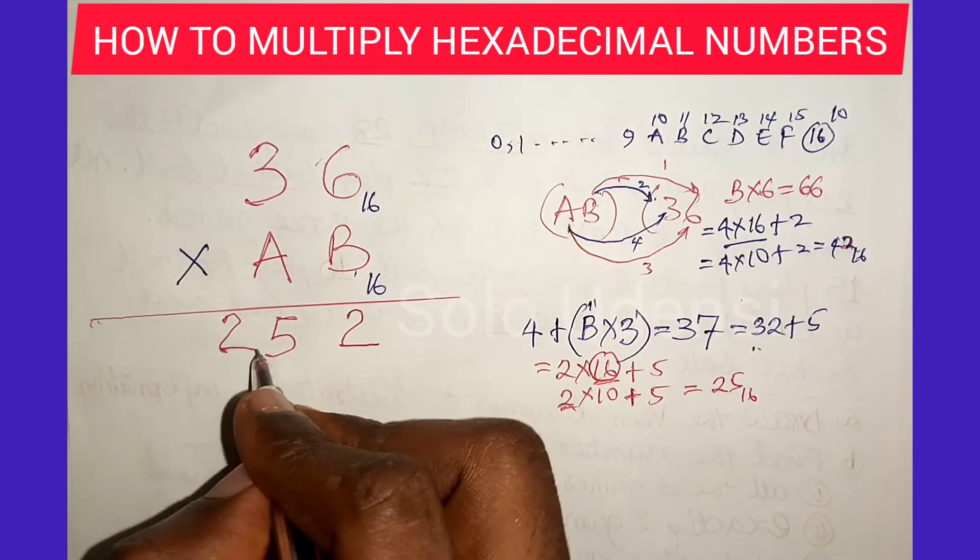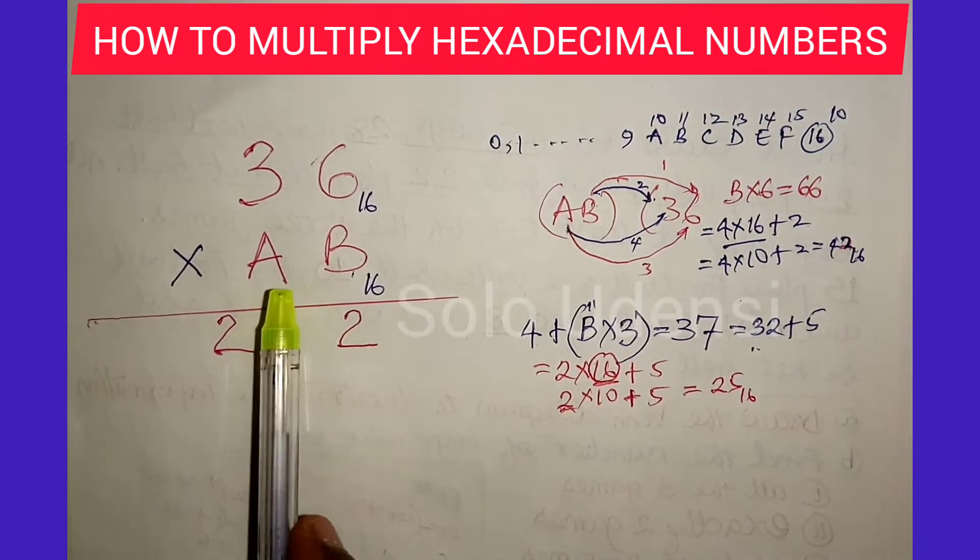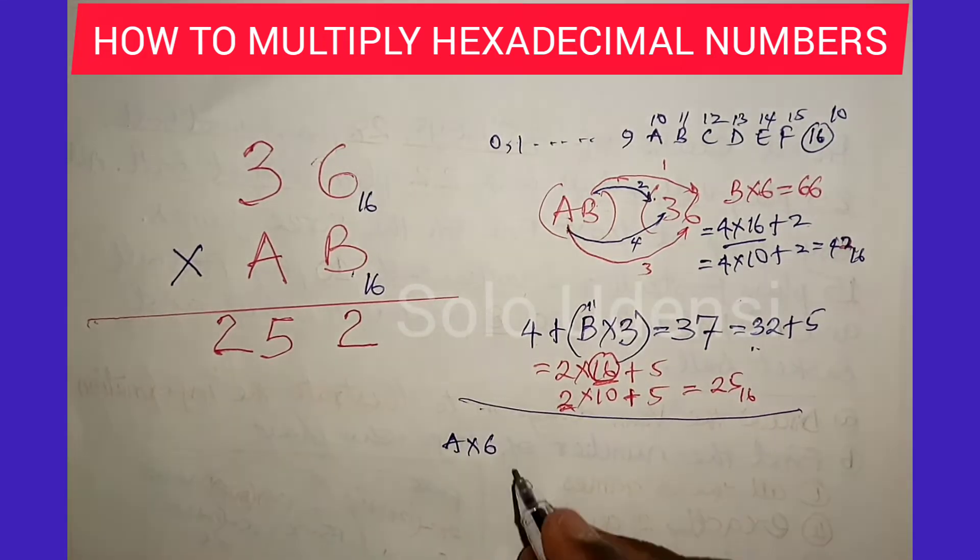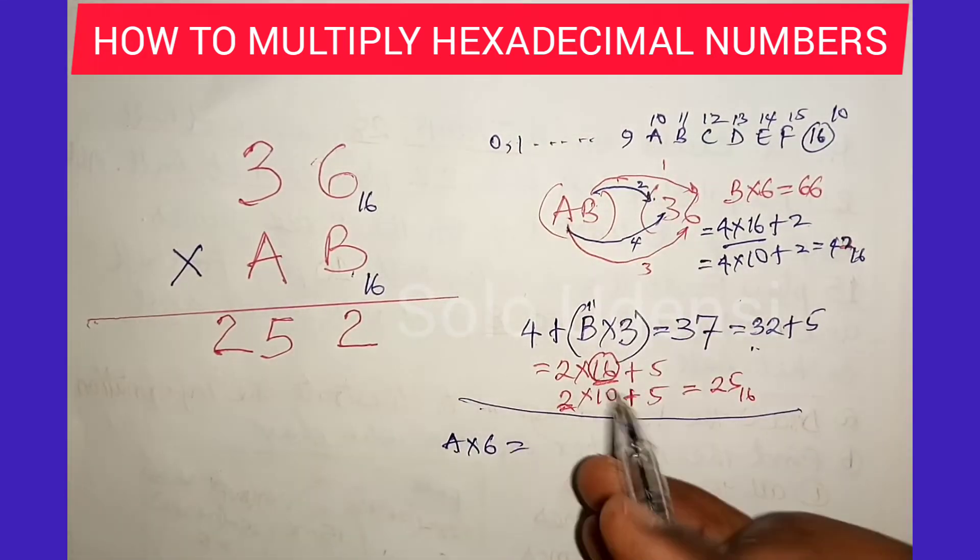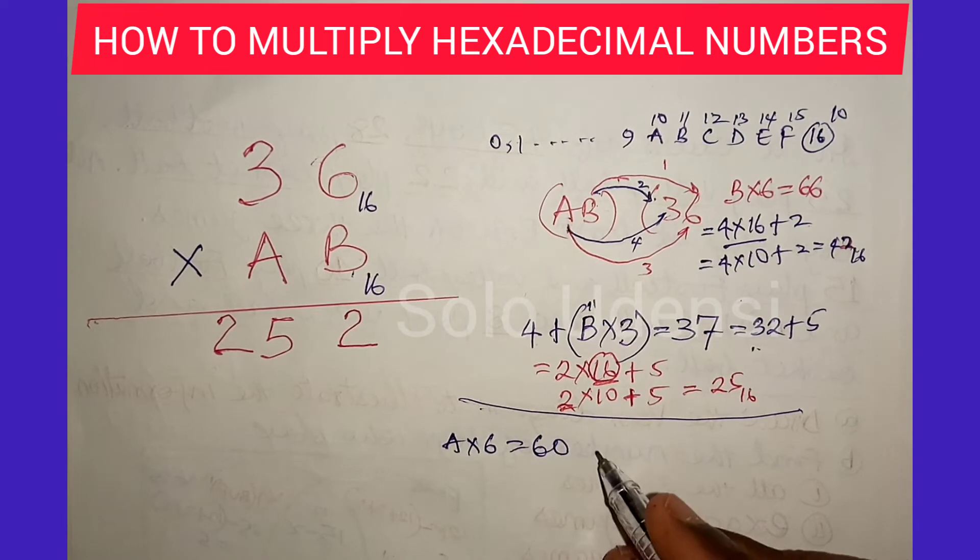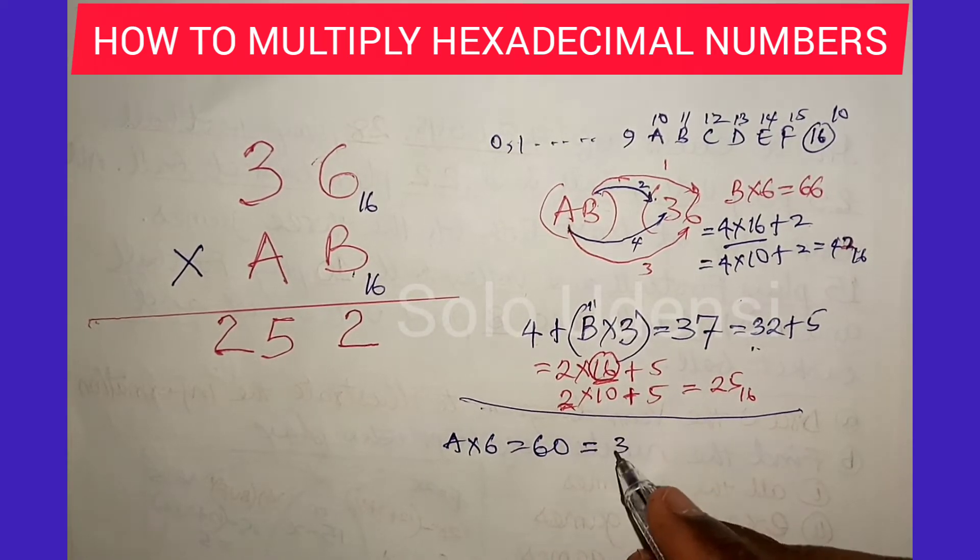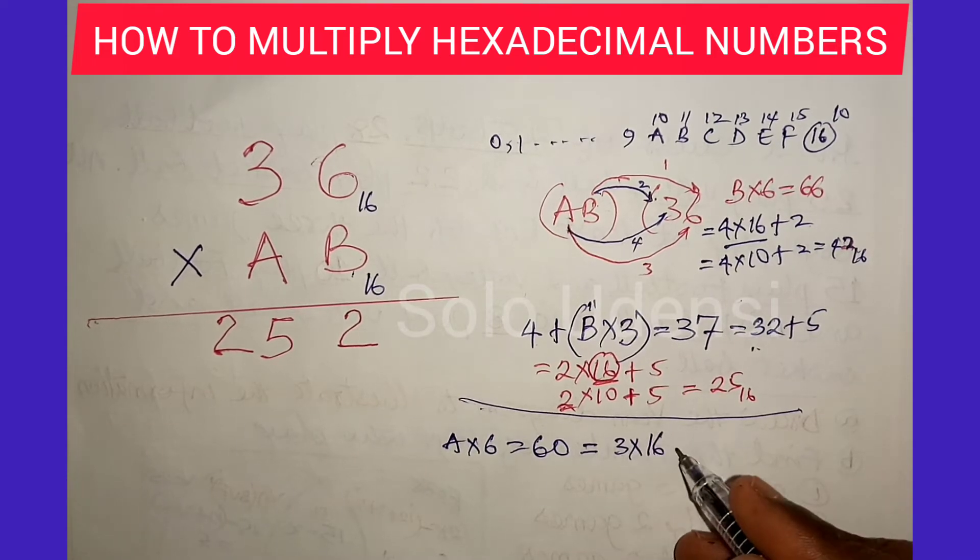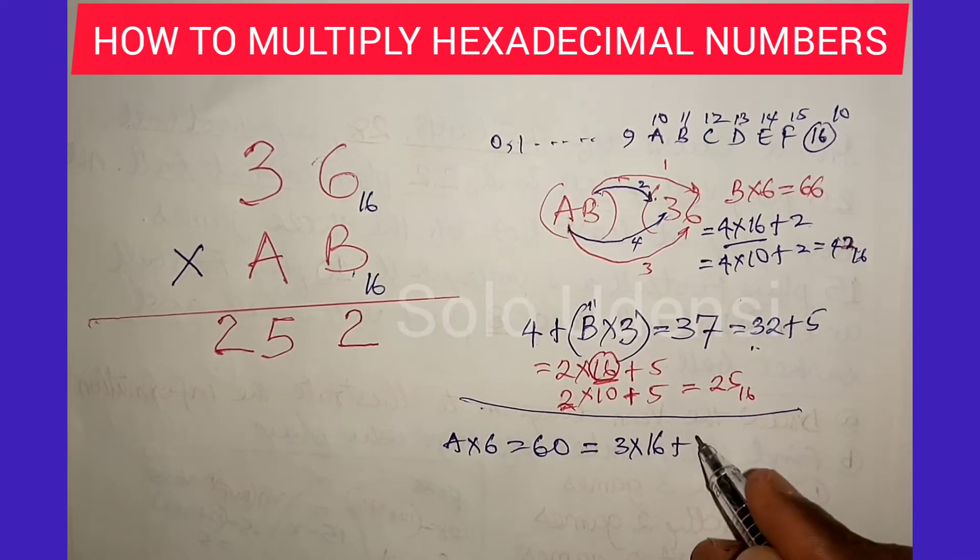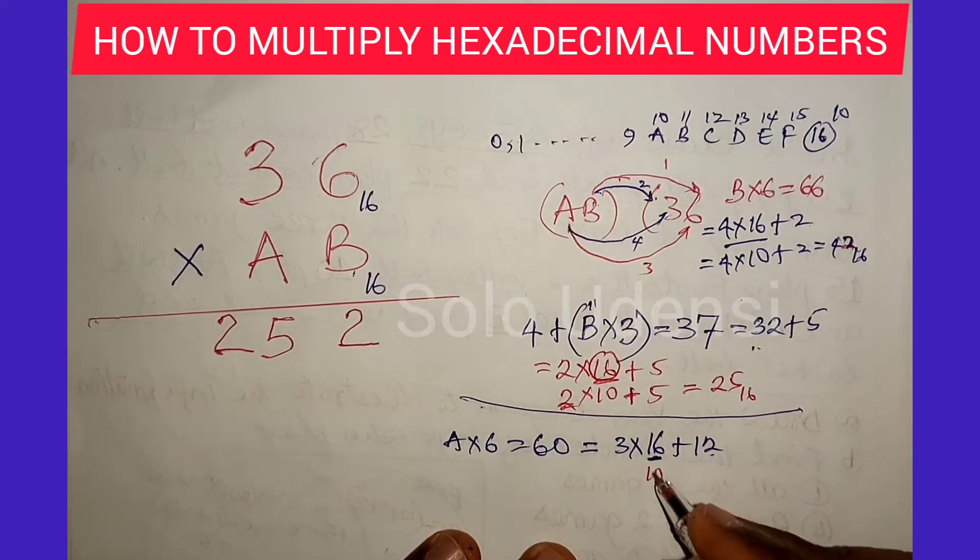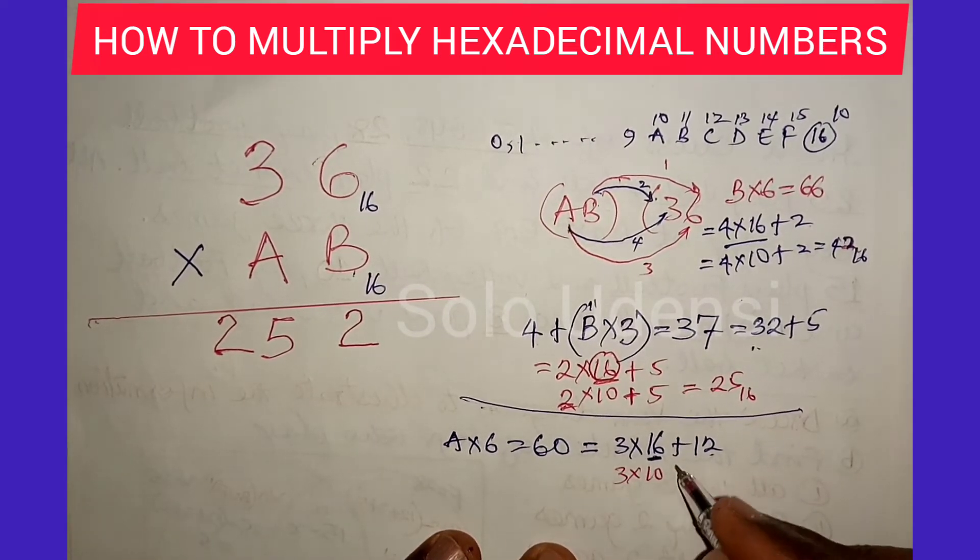So nothing is there, so we write down 2. The next one is to multiply A times 6, which is 60 because A is 10. So 60 is equal to 3 times 16 plus 12. This is 10 in base 16, times 3 plus 12.